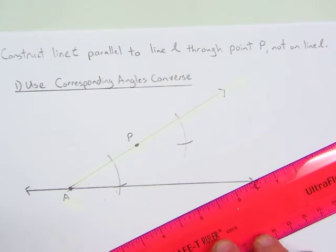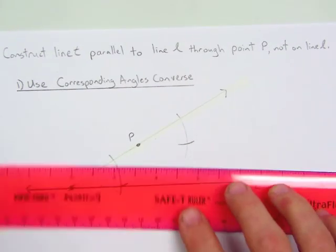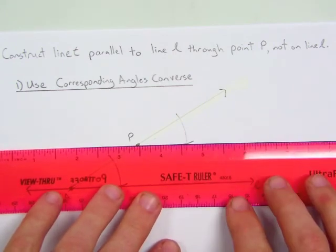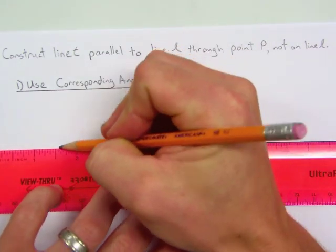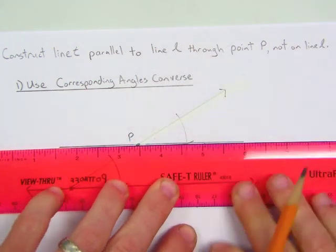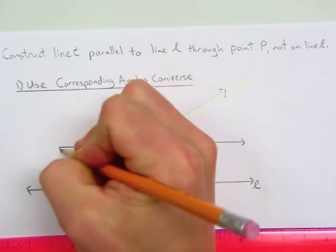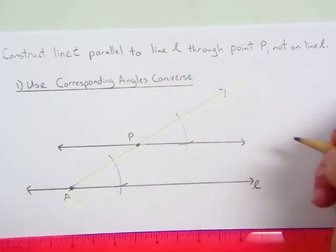From here, you're going to draw a line from point P through that intersection. We'll call this line T.